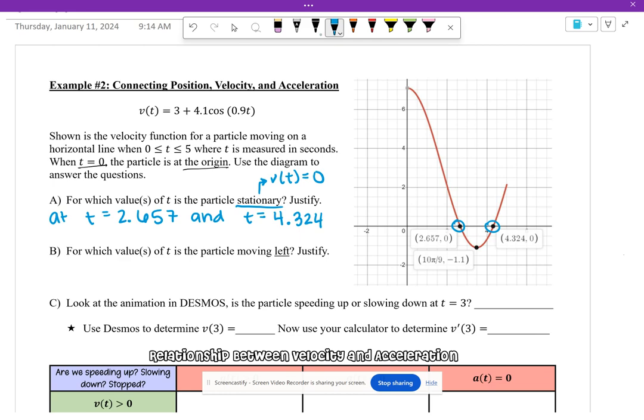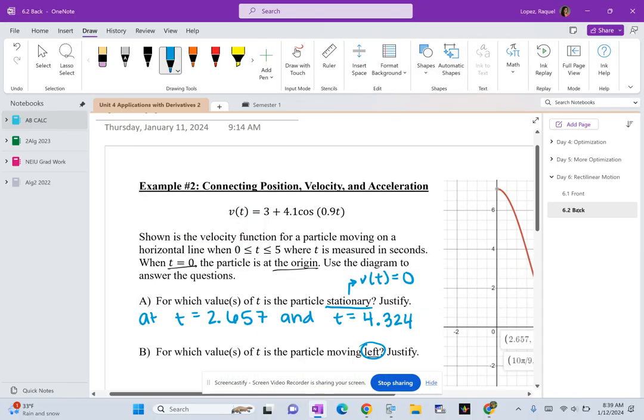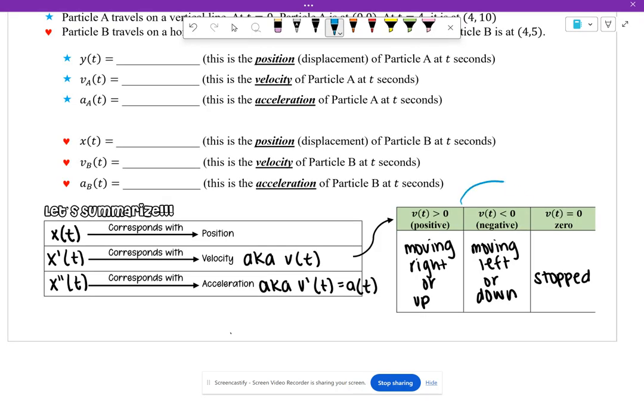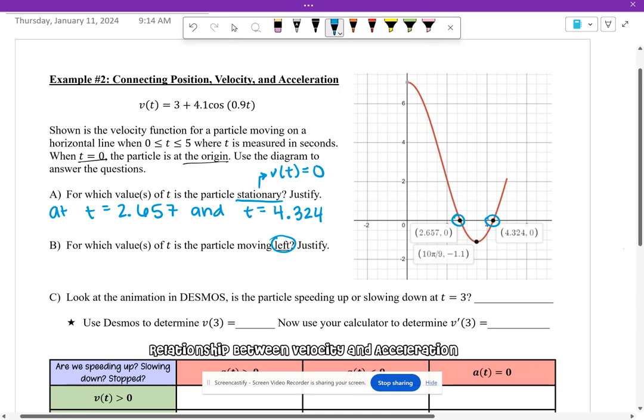So now we want to know at what point is the particle moving left. Let's go back to the table that I was looking at or that I made in the other video. So the particle is moving left when velocity is negative. So if you guys remember, negative is when the graph is going to be below the x-axis.